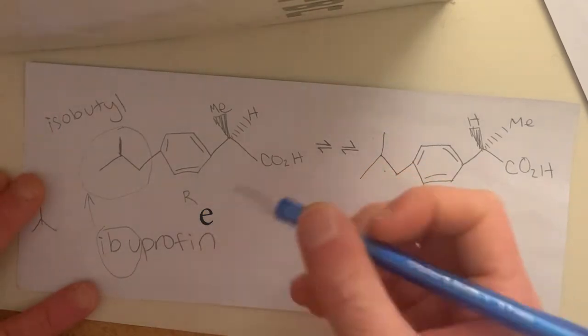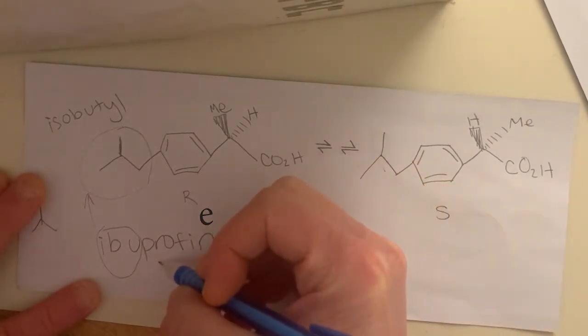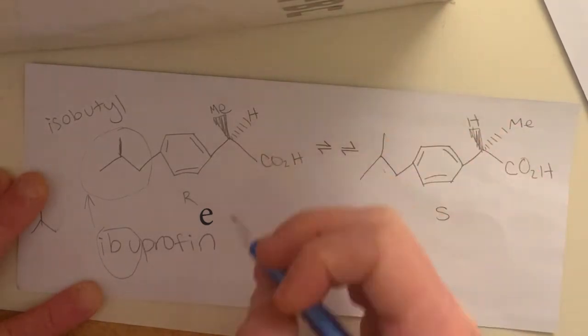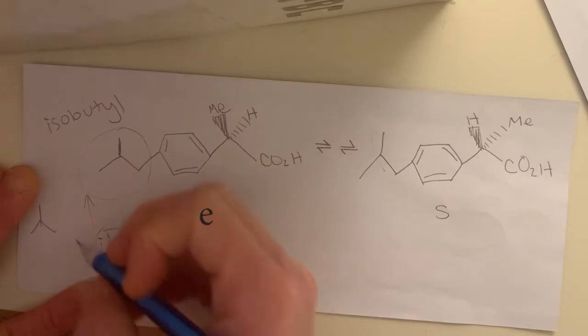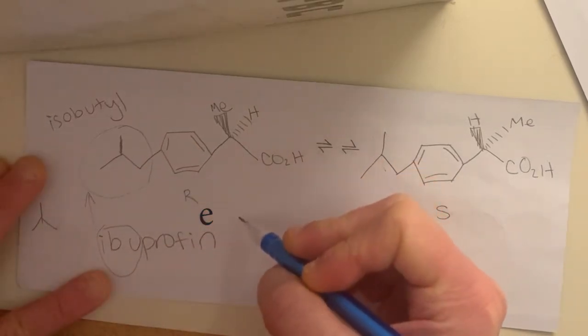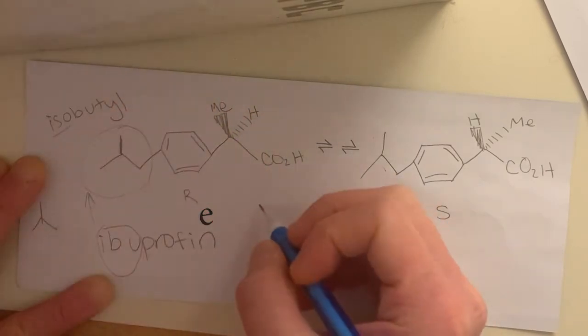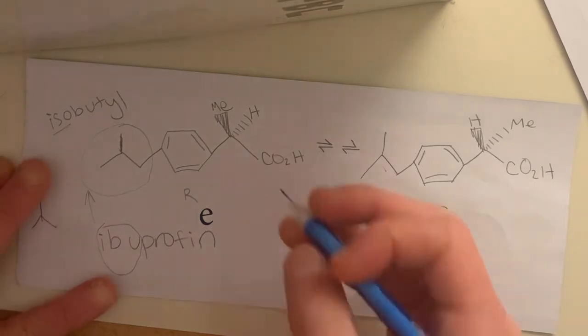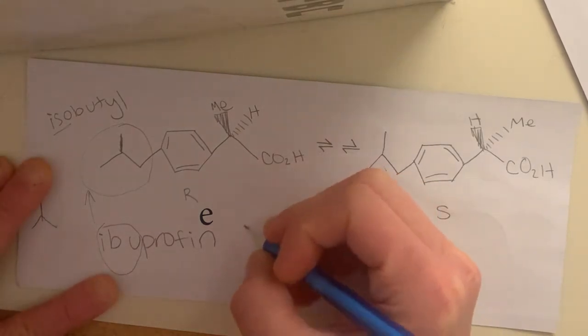What about the pro part? So the pro part is actually coming from propyl. So butyl is four, and propyl is three. That's what this means, so it's like hexa, you know, all the ones that you might that are more familiar, maybe later.